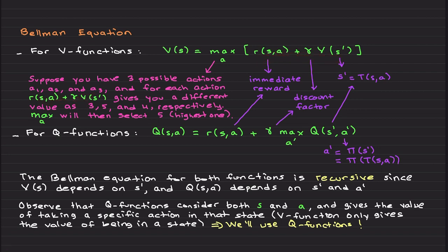As for example, let's say for action a1 three, action a2 five, and action a3 four. Then max a is nothing but it selects five.